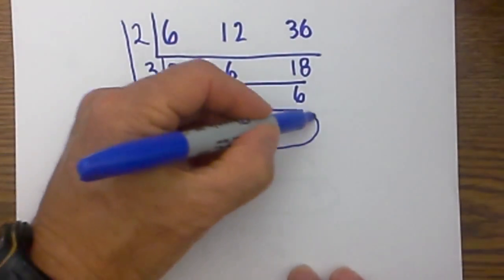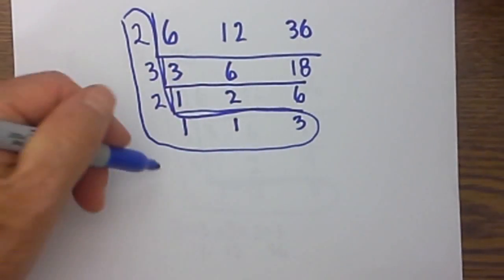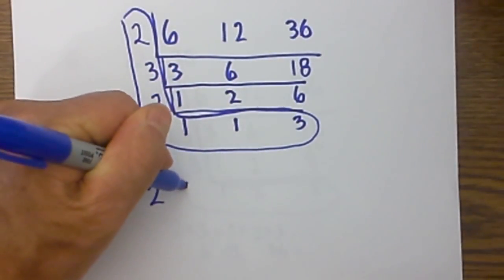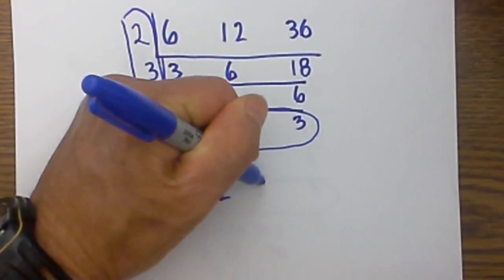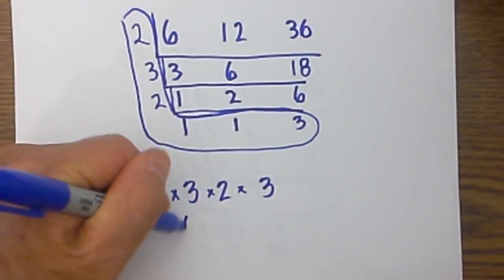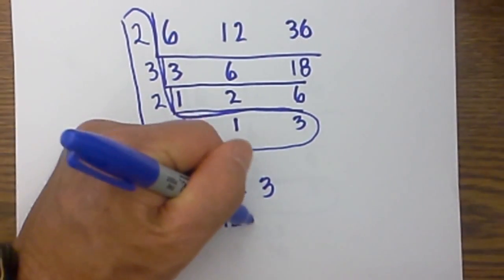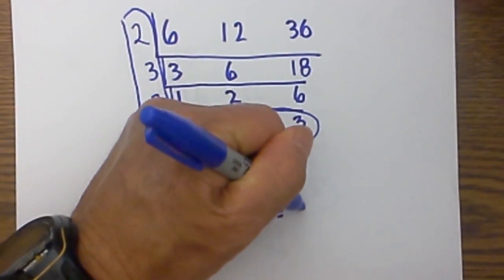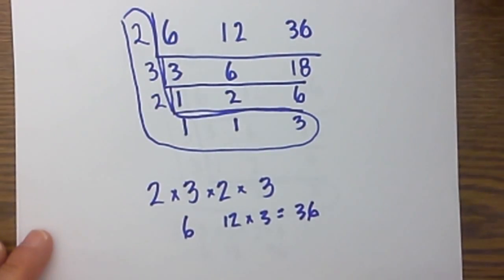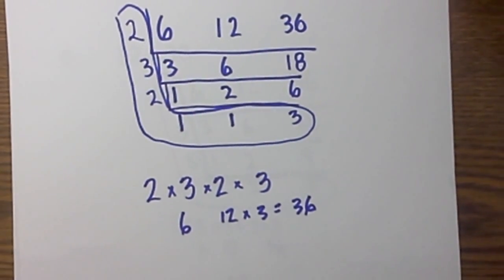I am going to draw an L around these and these are the numbers that you will multiply together: so I have 2, 3, 2. 3 times 2 is 6, 6 times 2 is 12 and 12 times 3 is 36. So using the ladder method the LCM for 6, 12, and 36 is 36. Let's move on to the next one.